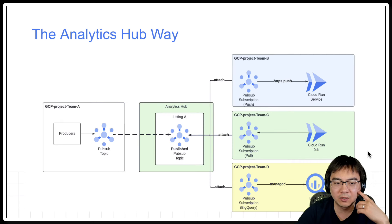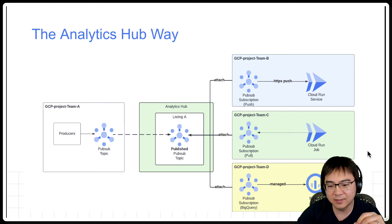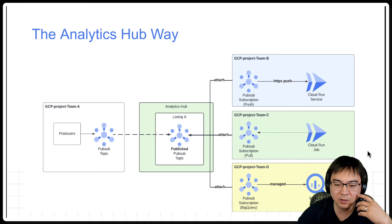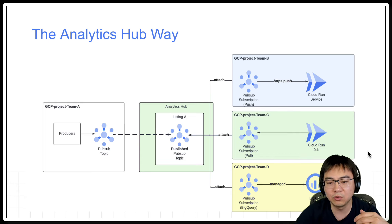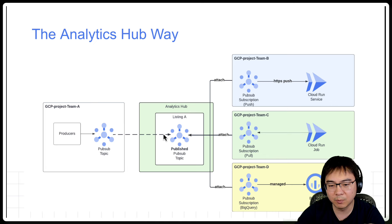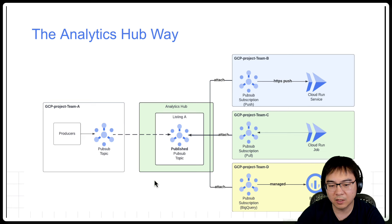This brings us to why Analytics Hub is very powerful in this case. As we all know, Analytics Hub is already very powerful for sharing data, particularly with BigQuery tables. It does this by creating exchanges and listings, and then subscribers can create something called a linked dataset to consume data from publishers without duplicating it. In this particular case, it is very similar — all I've done is added Analytics Hub in the middle.